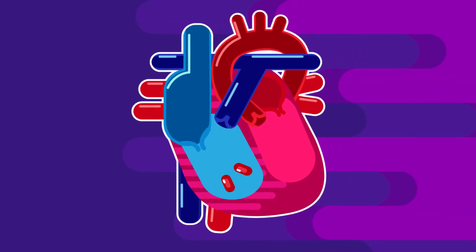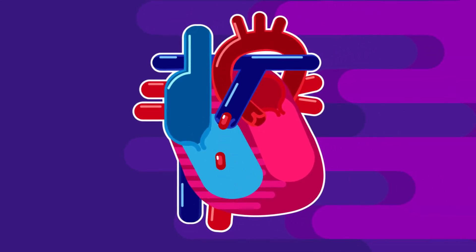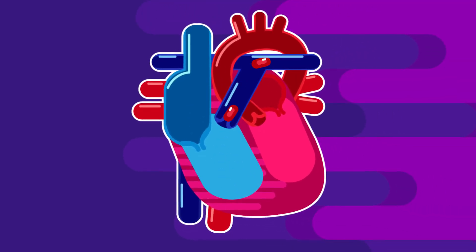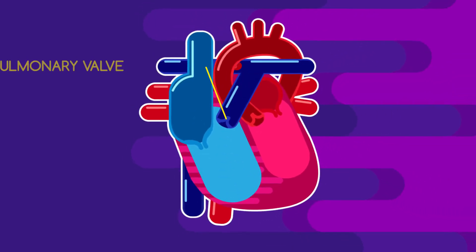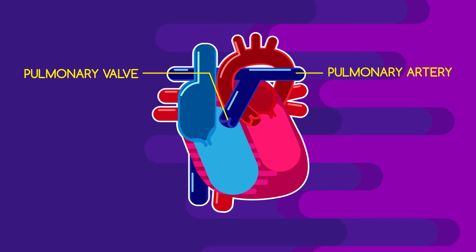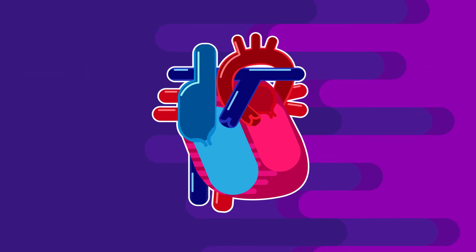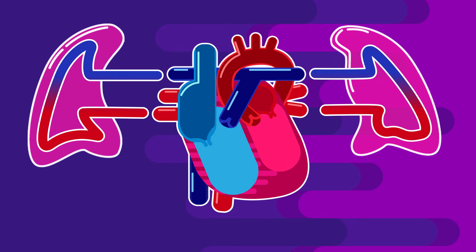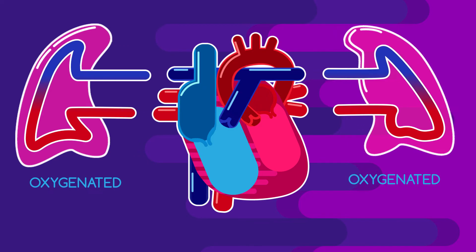When the right ventricle contracts, it forces this deoxygenated blood through the pulmonary valve into the pulmonary artery, which branches out into the right and left lungs. The deoxygenated blood flows through the lungs, becomes oxygenated, and then returns to the heart.